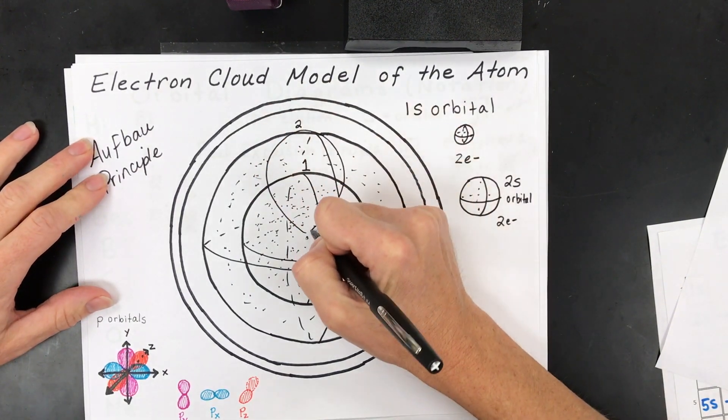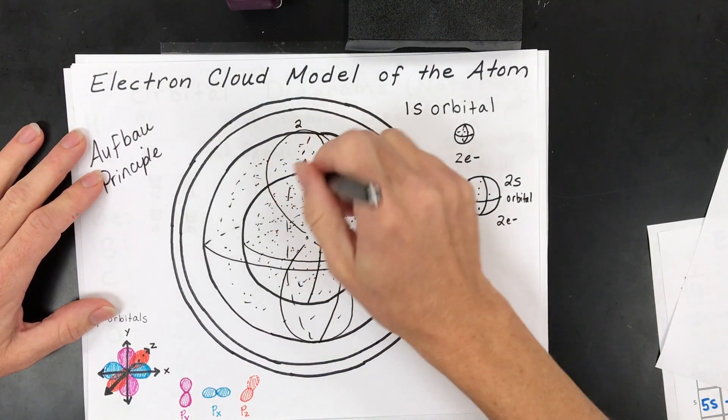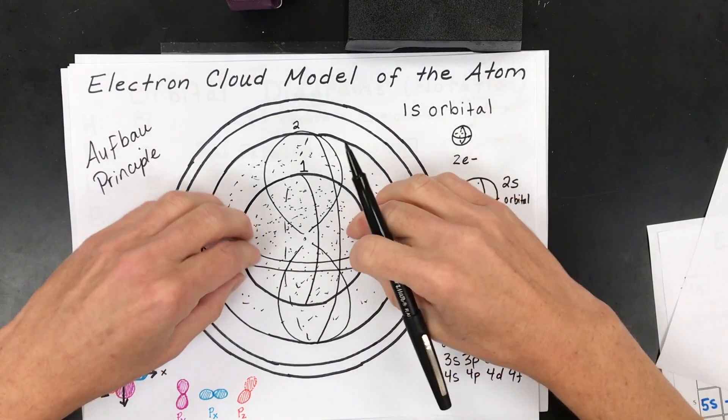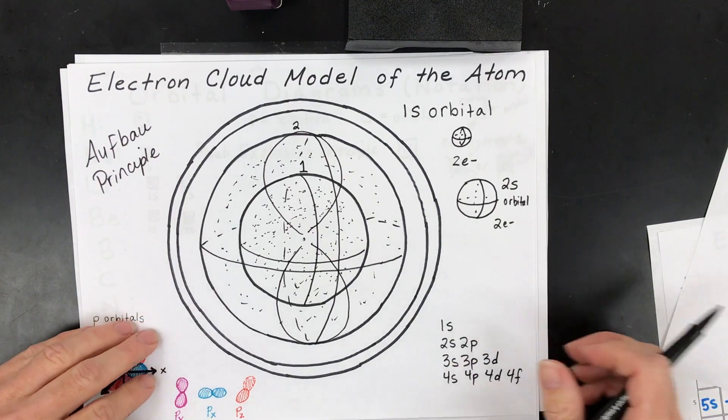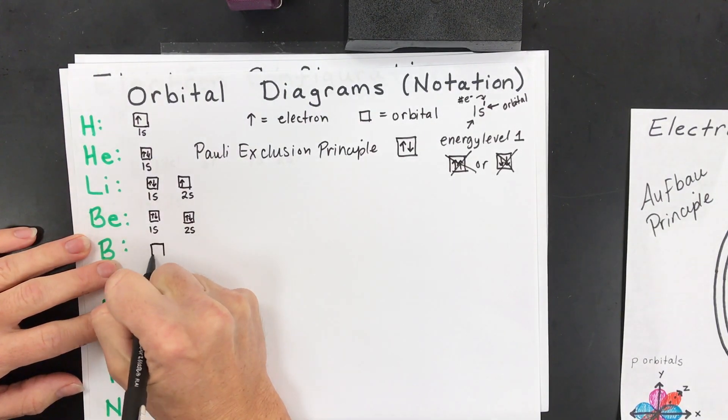So if I draw my first p-orbital, and we'll draw this in the y direction here, that electron is going to end up up here and kind of down here. And it won't go into these other areas of three-dimensional space. So when you get to the next step, when you do boron, you have a new orbital.